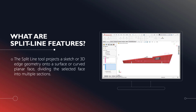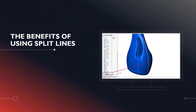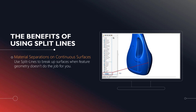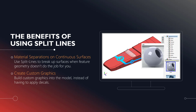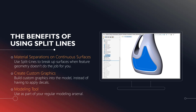So what are split line features? In a nutshell, the split line tool allows you to project a sketch or 3D edge geometry onto a surface or curved planar face, which then divides it into multiple areas depending on the sketch geometry you're using. Some of the benefits can include making a material separation on a continuous surface, where you might not actually have feature geometry to define that material separation for you. You can use it to create custom graphics, or use it as a regular modeling tool in your day-to-day modeling arsenal.